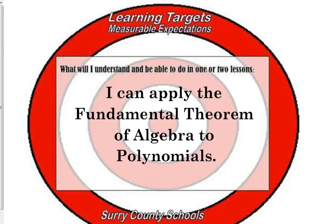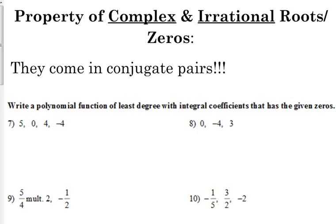The first way that we're going to do this is we are going to write polynomials when we know what their zeros are. If we know what their zeros are, we are going to write the actual polynomial expression for that. But before we do that, we need to talk about something. There's a property of complex and irrational roots slash zeros. Remember those words are interchangeable. They come in what we call conjugate pairs.